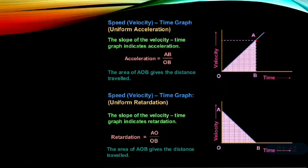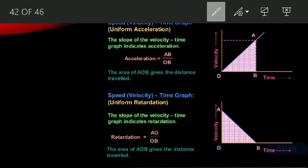Now the speed-velocity time graph for uniform acceleration. The slope of the velocity-time graph indicates acceleration, and acceleration is equal to AB upon OB, where AB is velocity and OB is time. The area of triangle AOB gives the distance travelled.